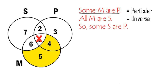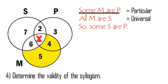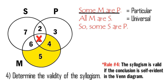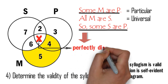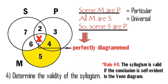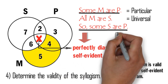Now that the Venn Diagram of the syllogism is complete, let us determine its validity. Rule 3 says we diagram only the premises, so we do not diagram the conclusion. Rule 4 says the syllogism is valid if the conclusion is self-evident. The conclusion says: some S are P. Looking at the Venn Diagram, there is an X on area 1, which indicates that there is at least one member of S that is a member of P. Hence, the conclusion 'some S are P' is perfectly diagrammed and self-evident. Therefore, the syllogism is valid.